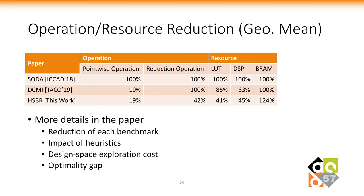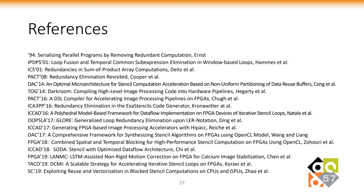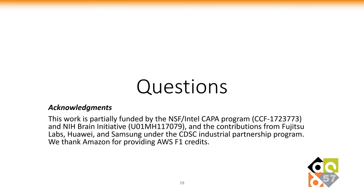Please feel free to view our paper for more details. In this paper, we present two computation reuse discovery algorithms: the dynamic programming algorithm finds optimal reuse for small kernels, while the heuristic-based algorithm is effective on large kernels. We also present an architecture-aware cost metric which helps minimize the storage overhead brought by computation reuse. Our work is open source. Comments and questions are very welcome. Thank you.